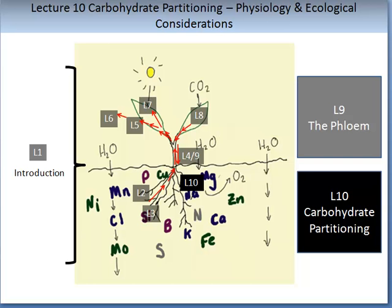We are learning about the processes of Plant Physiology by taking a virtual journey through the plant. In the first lecture we were introduced to the subject of Physiology, and subsequent lectures have allowed us to travel from the roots all the way through the xylem up into the leaves, where we looked in depth at mechanisms such as photosynthesis. We have travelled back down the phloem and now we are looking at carbohydrate partitioning, which will take us into the roots. Please ensure that you have watched all the previous lectures, as many of the concepts learned there will be required for this lecture.